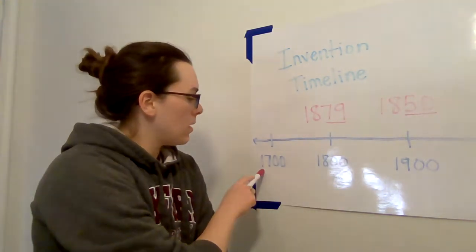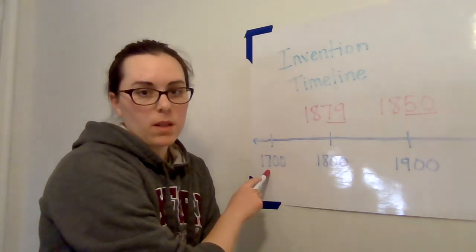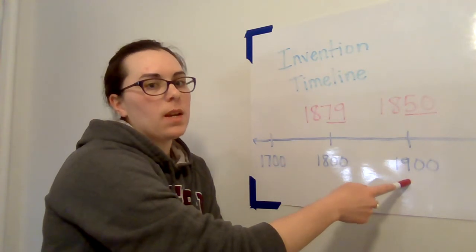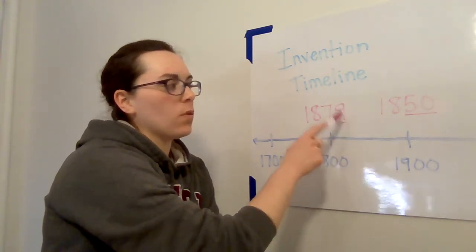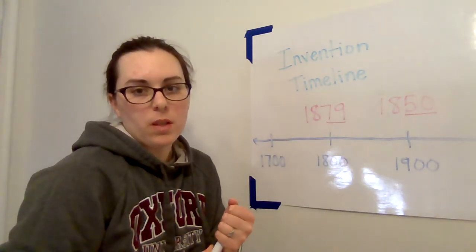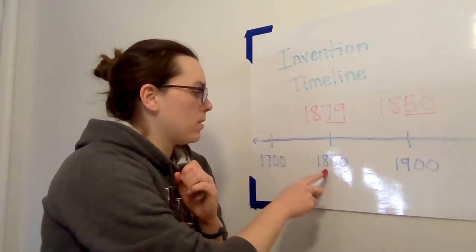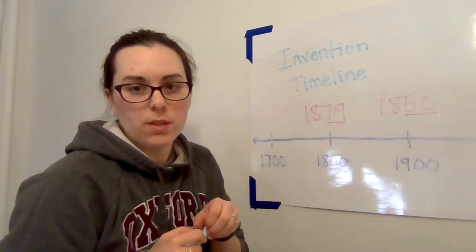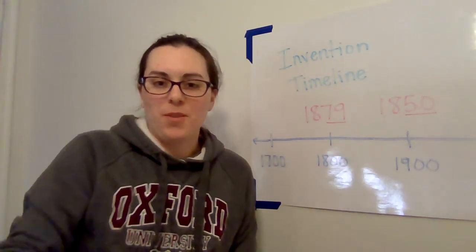So use the first two digits of the date to help you organize it into seventeens, eighteens, or nineteens, and then look at the third and fourth digit from there to help you organize in each of those centuries. All right, that's all I have for you.